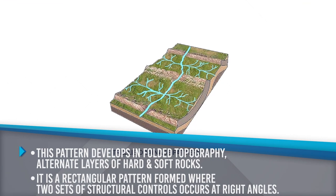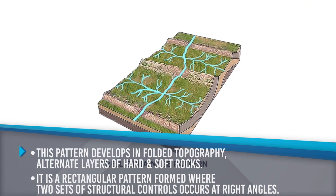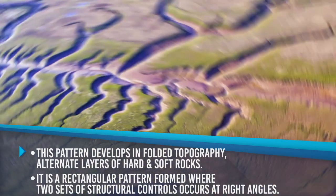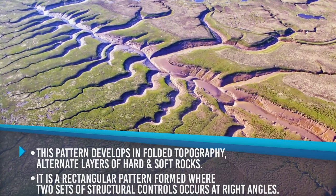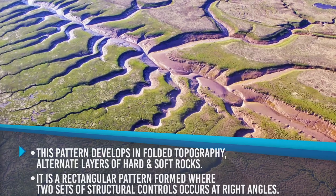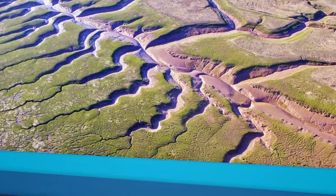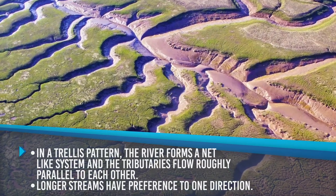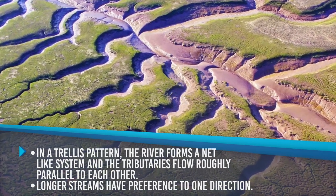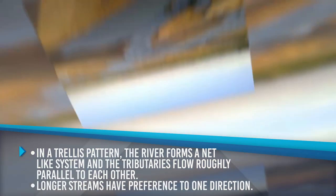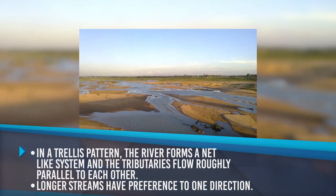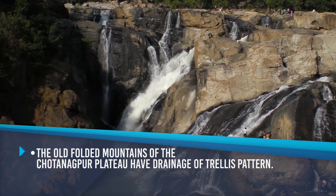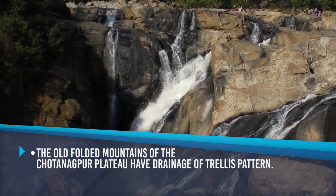Trellis Pattern: This pattern develops in folded topography with alternate layers of hard and soft rocks. It is a rectangular pattern formed where two sets of structural controls occur at right angles. In a trellis pattern, the river forms a net-like system and tributaries flow roughly parallel to each other. The longer streams have preference to one direction. The old folded mountains of the Chhota Nagpur Plateau have a trellis drainage pattern.